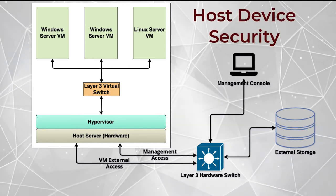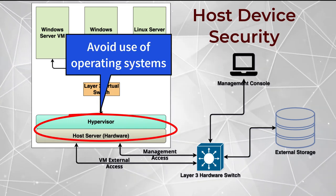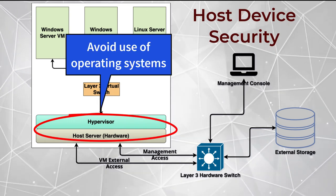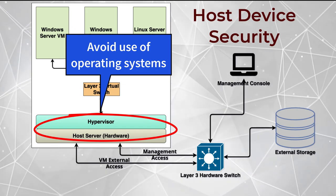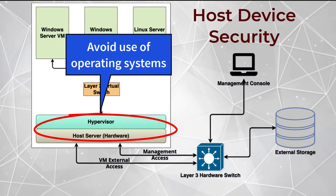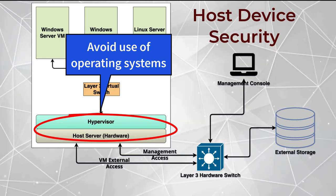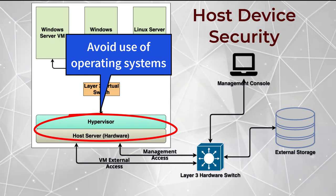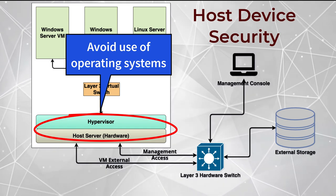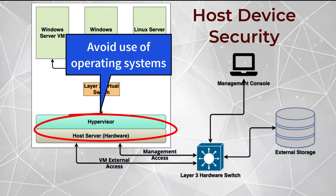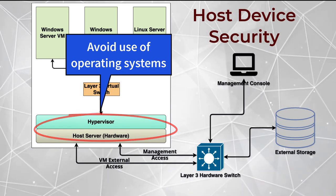The first consideration for host security is moving to Type 1 hypervisor implementations, eliminating the need for an operating system. If Type 2 hypervisors are used, organizations must harden the OS following the same steps already described for VM hardening. Access to the OS should be highly controlled, and admin duties segregated to separate OS maintenance from hypervisor and VM maintenance.